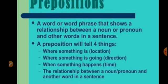Prepositions will tell four things. First is where something is — means location के बारे में बताना. कोई भी चीज़ जहाँ रखी है, तो वो उसकी location बताती है कि वो कहाँ है.